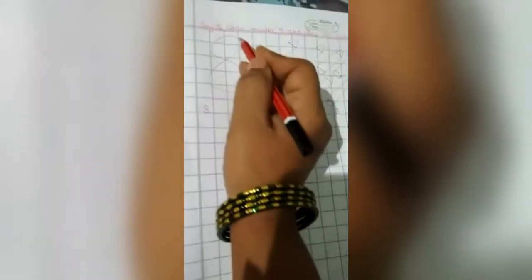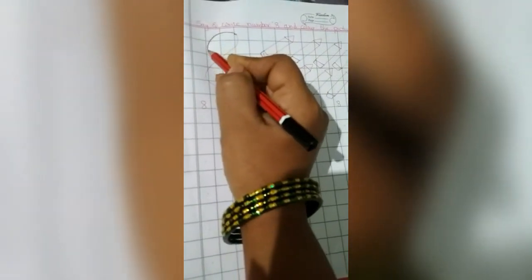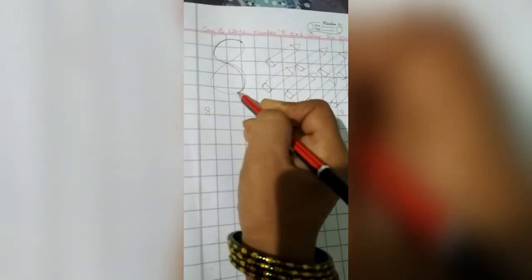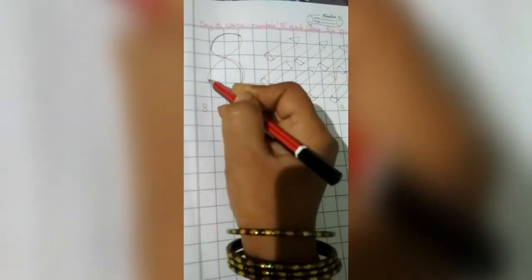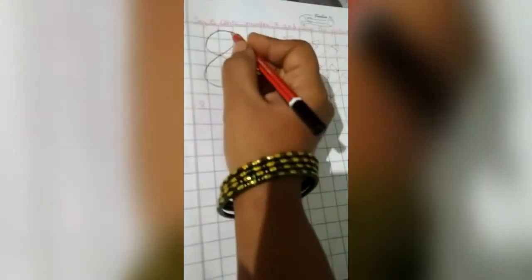Write number eight. Left open curve, right open curve, slanting line. Again, left open curve, right open curve. Like this. Okay children, one second, see.